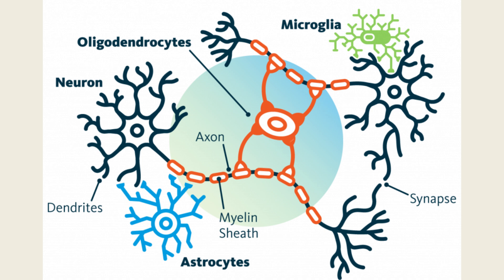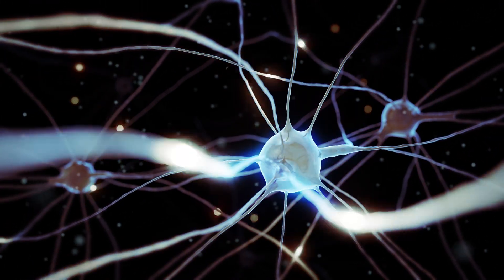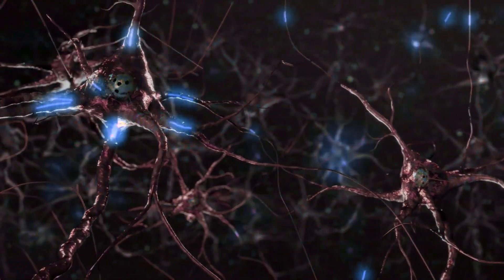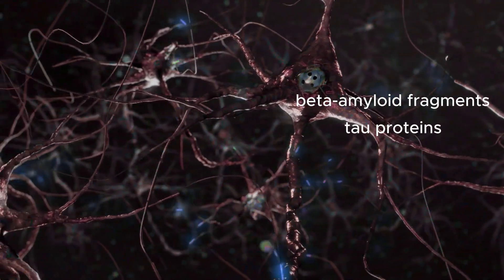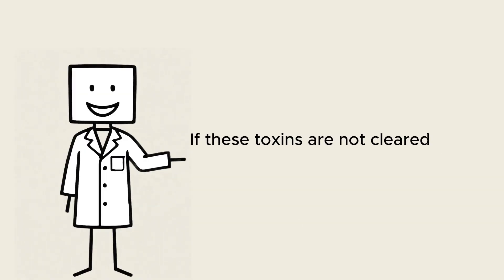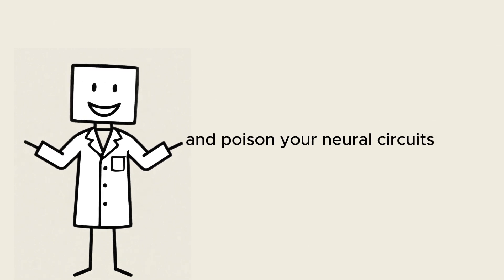Together, glial cells ensure the glymphatic rinse cycle runs smoothly. This nightly cleanup is essential because your brain produces an enormous volume of waste every day. Neurons fire billions of times, generating beta-amyloid fragments, tau proteins, and reactive oxygen species. If these toxins are not cleared, they begin to clump, tangle, and poison your neural circuits.